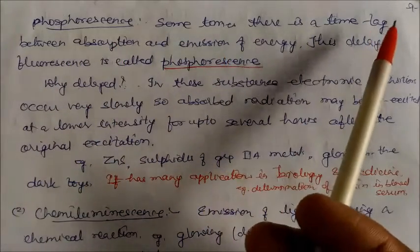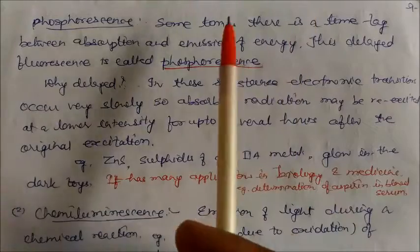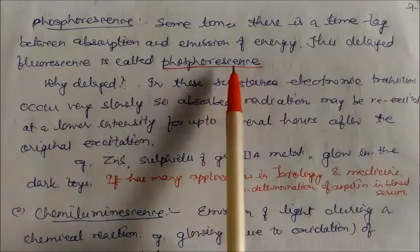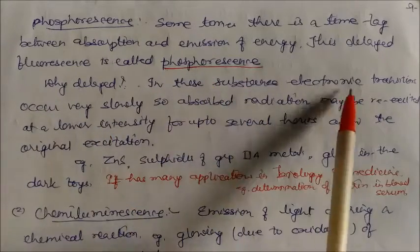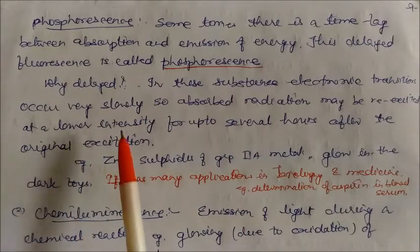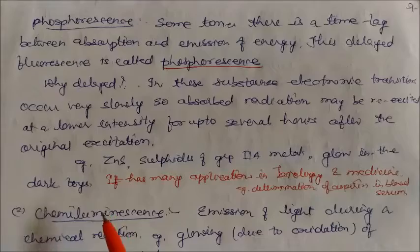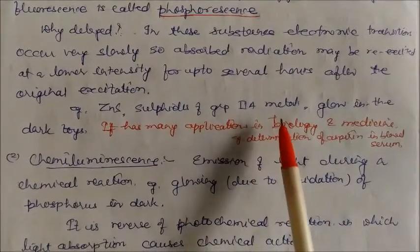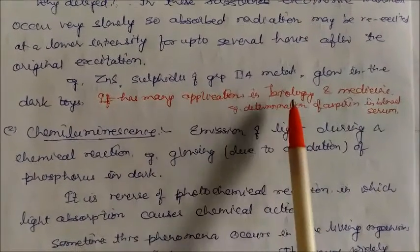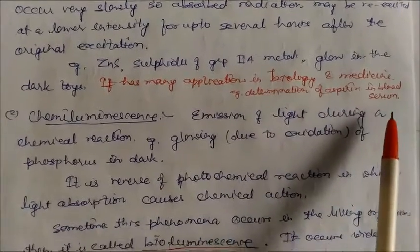Phosphorescence: sometimes there is a time lag between the absorption and emission of energy. When emission of energy is delayed, this delayed fluorescence is called phosphorescence. It is delayed because in these substances, electronic transitions occur very slowly. Absorbed radiation may be re-emitted at low intensity for up to several hours after original excitation. Examples: zinc sulfide and sulfides of Group 2 metals, which glow in the dark. Applications include biology and medicine — for example, determination of aspirin in blood serum.